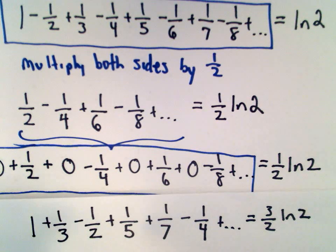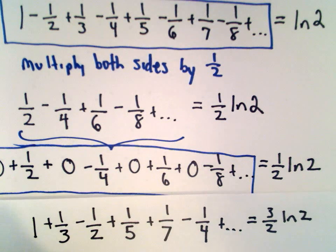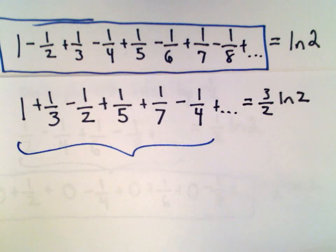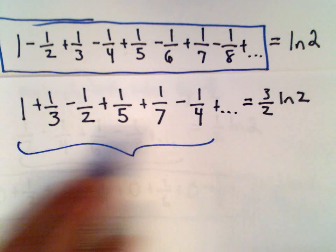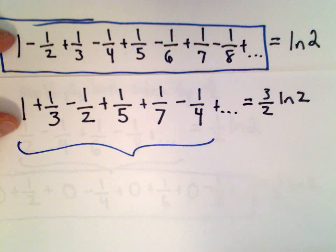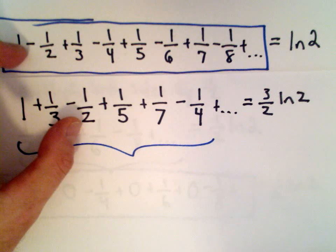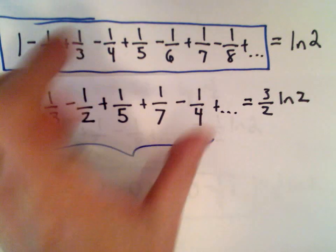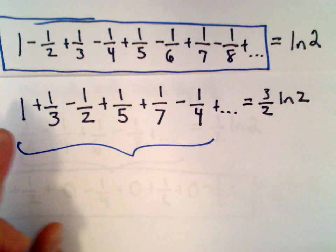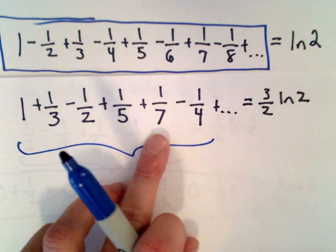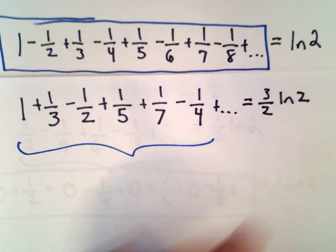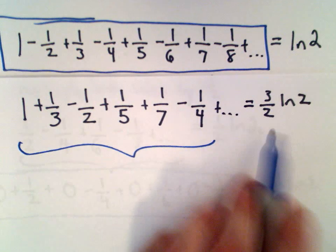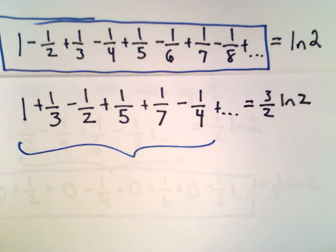Let's compare this new series with the original series. Notice that it's actually the same values — the same terms being used, but in a different order. I still have my positive one, positive one third, negative one half, positive one fifth, positive one seventh, negative one fourth — and that's the pattern in this new series. Two positive terms, then a negative term, two positive terms, then a negative term. We're using the exact same numbers, just in a different order, and lo and behold, we get a totally different value.